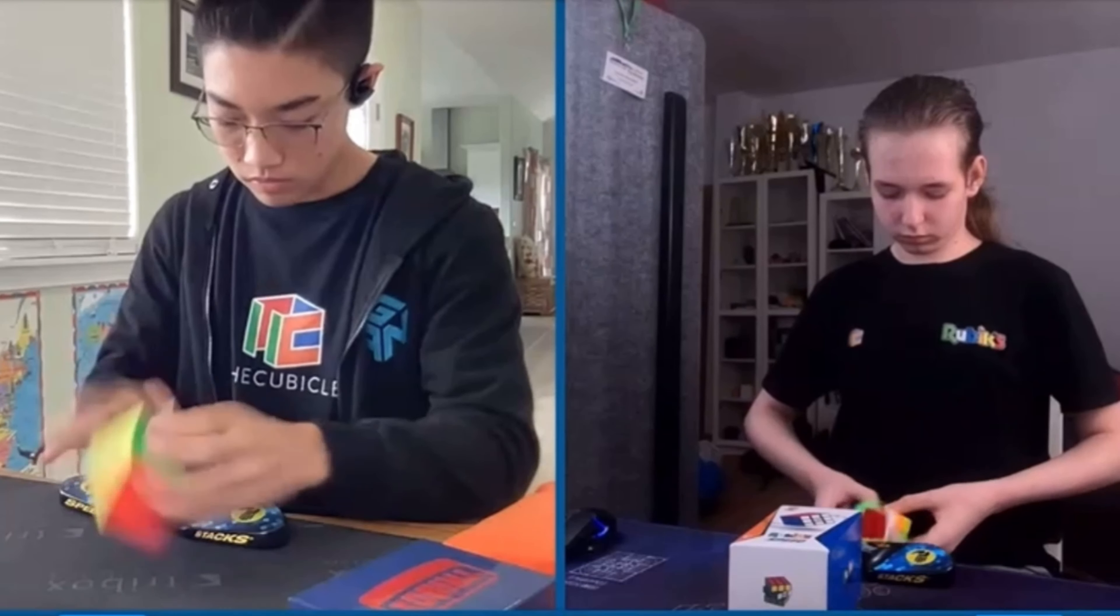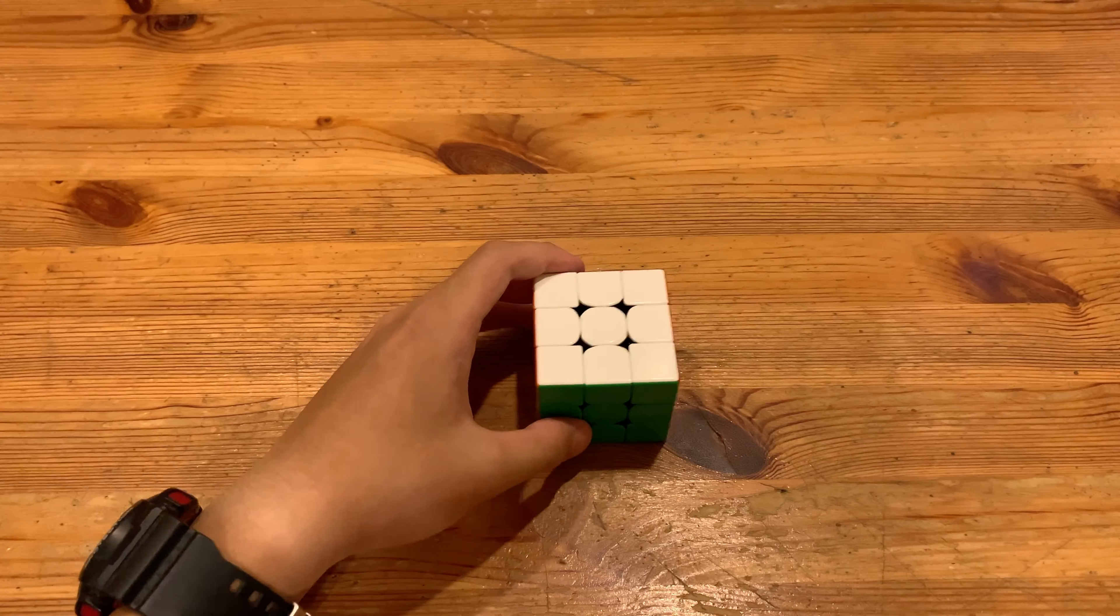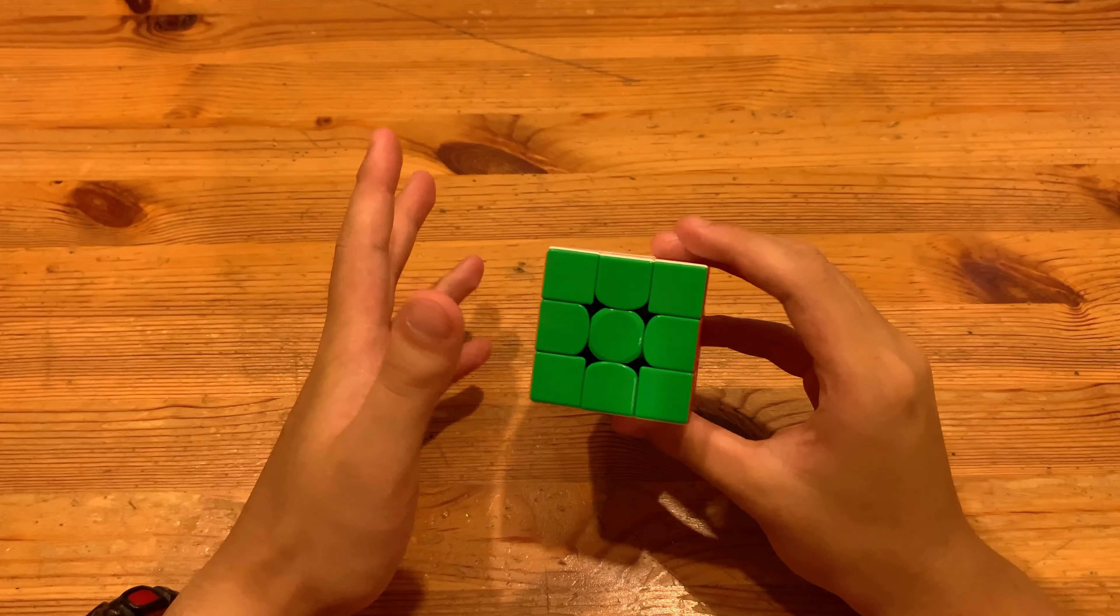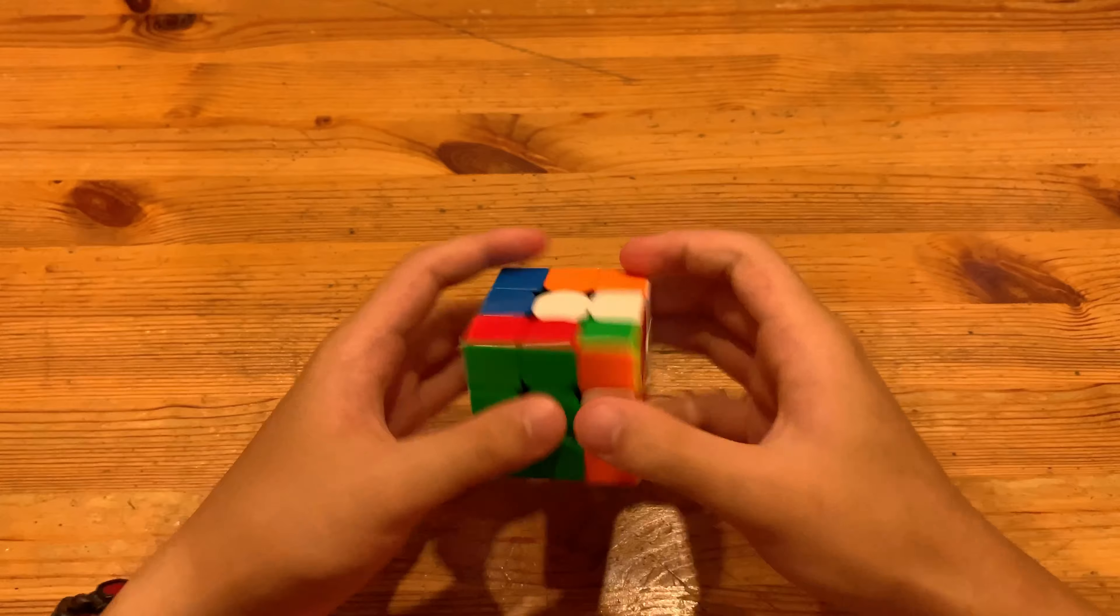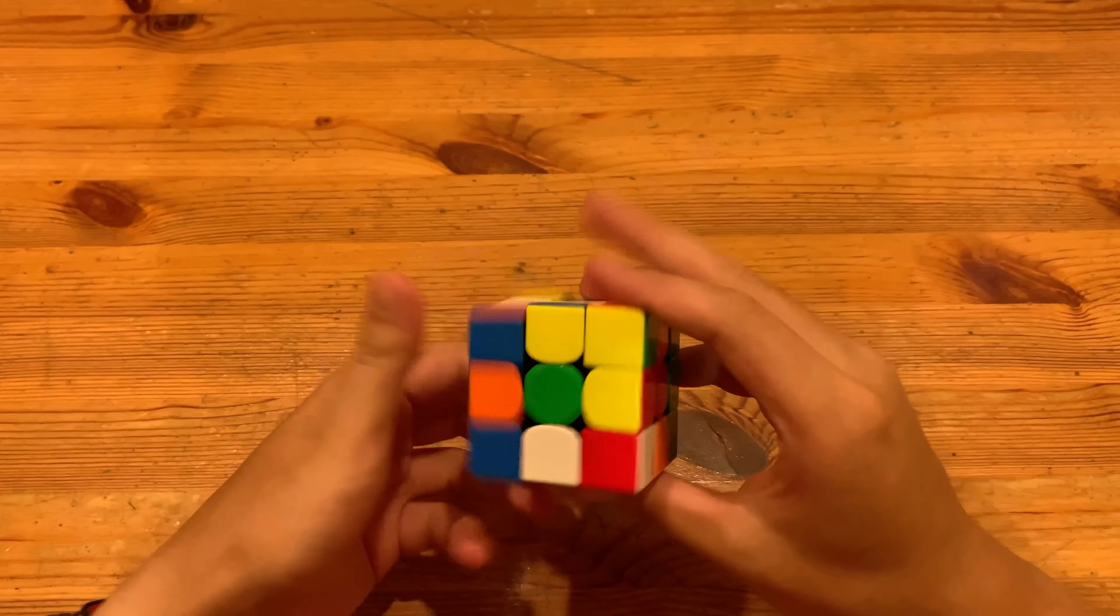Oh and that's a quick F2L, are you kidding me Maddie? What's up guys, this will be a breakdown of Maddie's full step 4.07 three by three single and the scramble will be in the description.